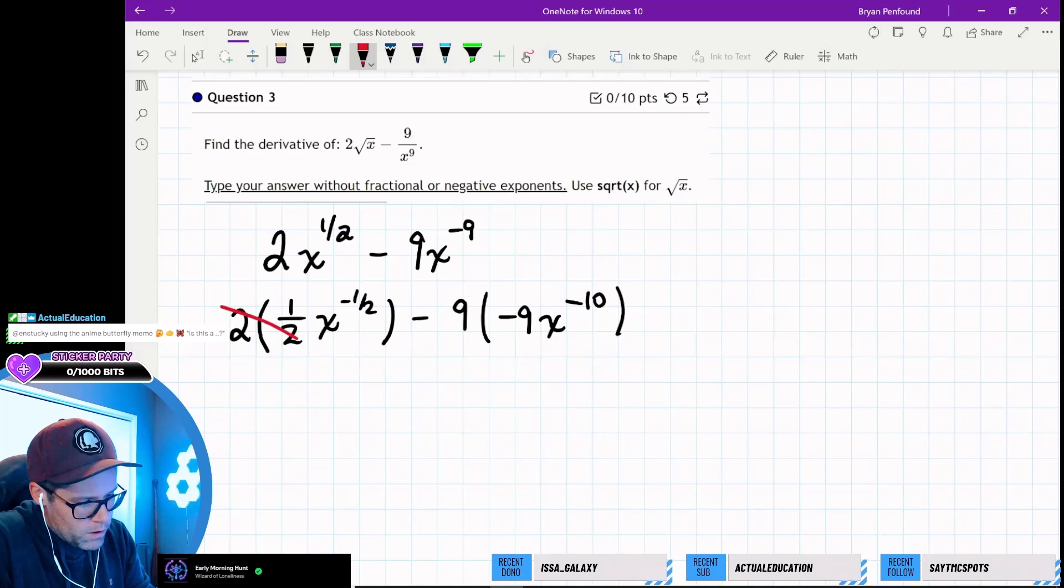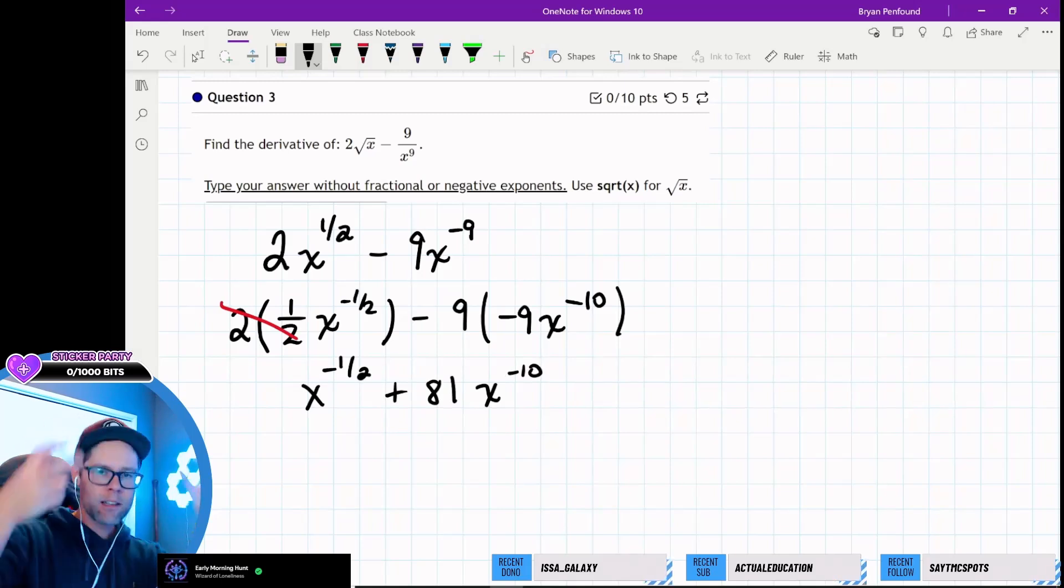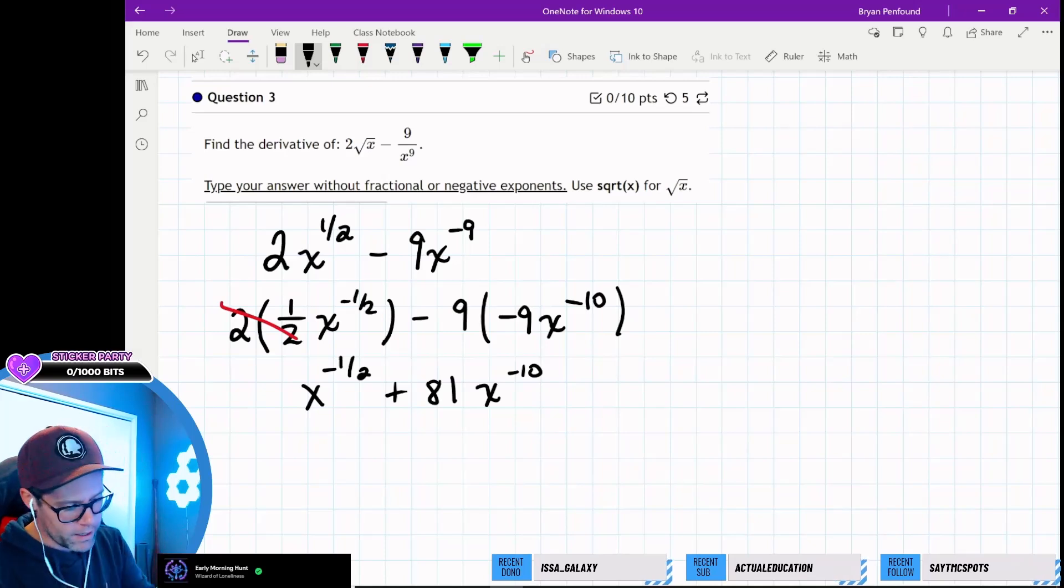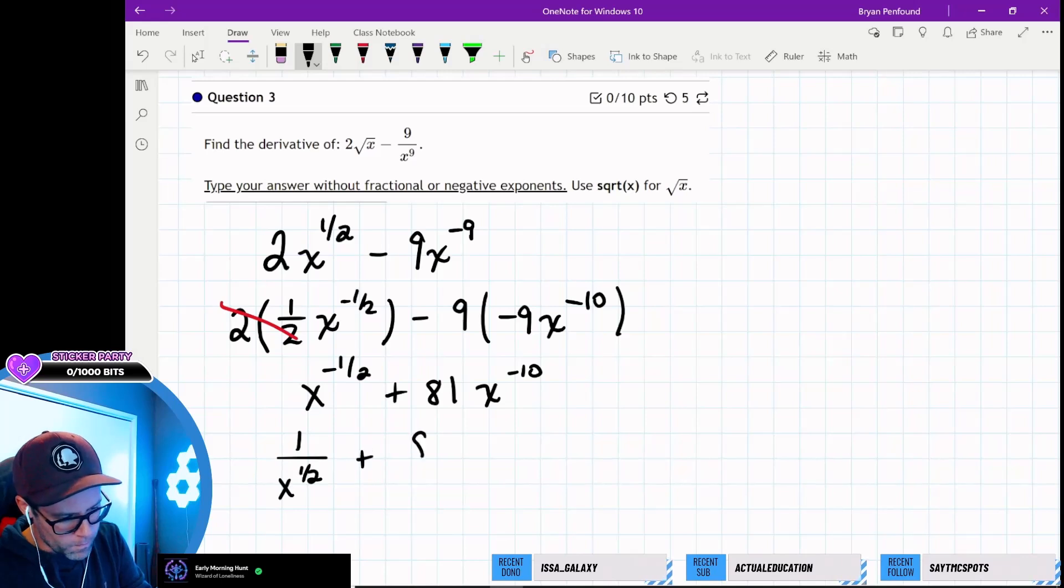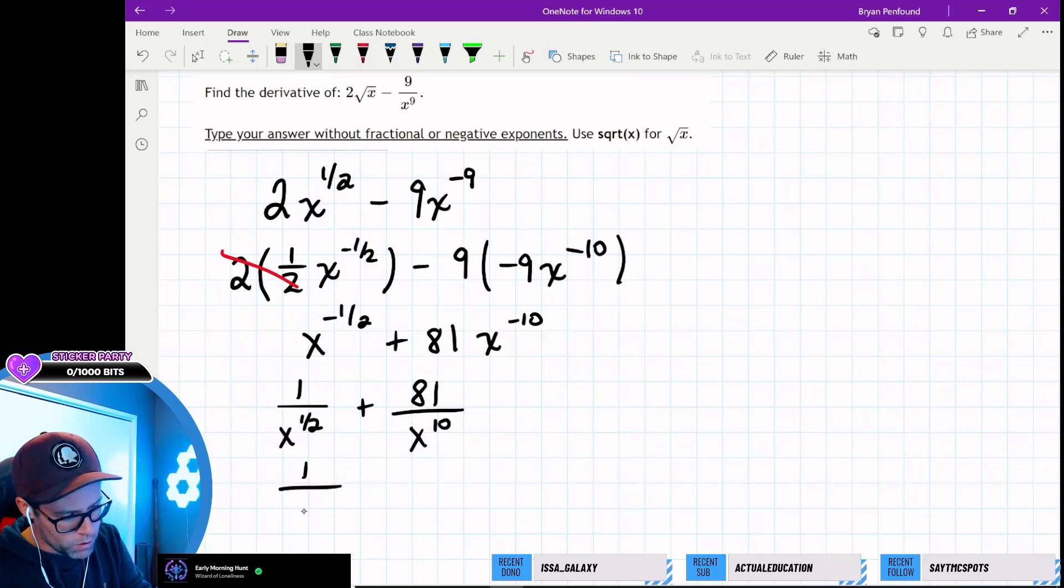And then it looks like these will just divide out to give us 1. So we're going to be left with x to the minus half plus 81 x to the minus 10. So both of these x's can now get put back into their respective denominators. And that's going to cause those powers to become positive. So here we'll get 81 x to the 10. And then the last thing that we'll want to do here is just convert that 1 half back to a square root. So 1 over root x should do the trick. And then we need an 81 over x to the 10.